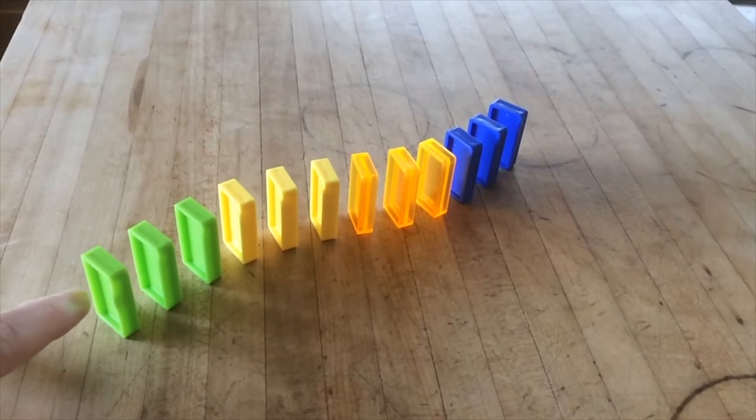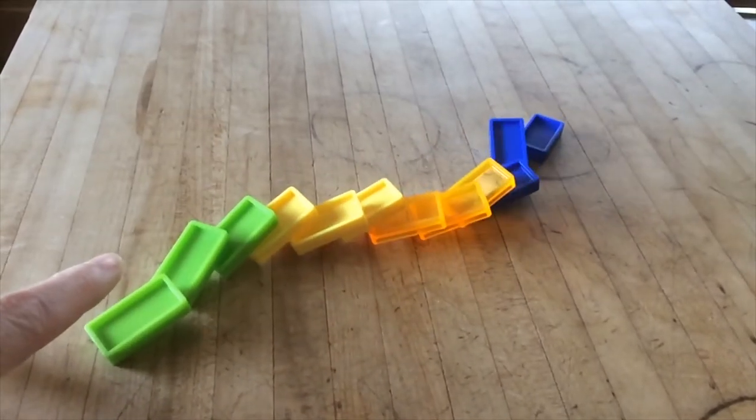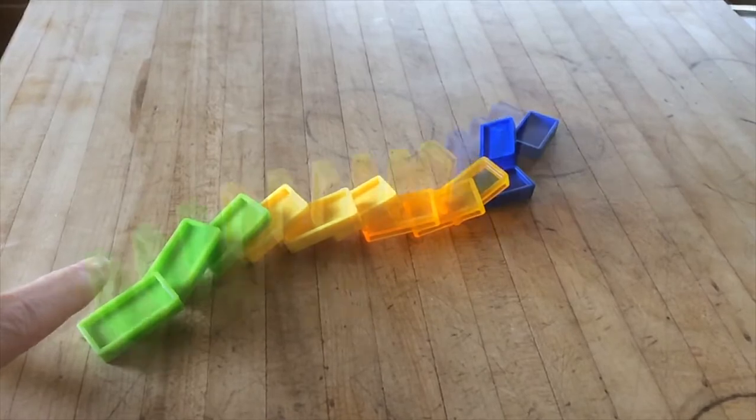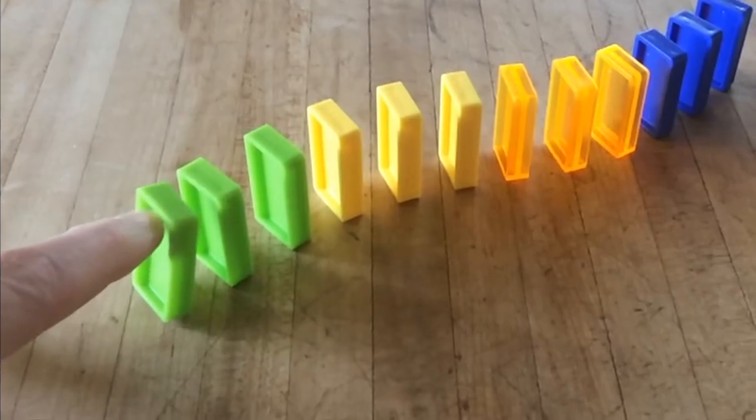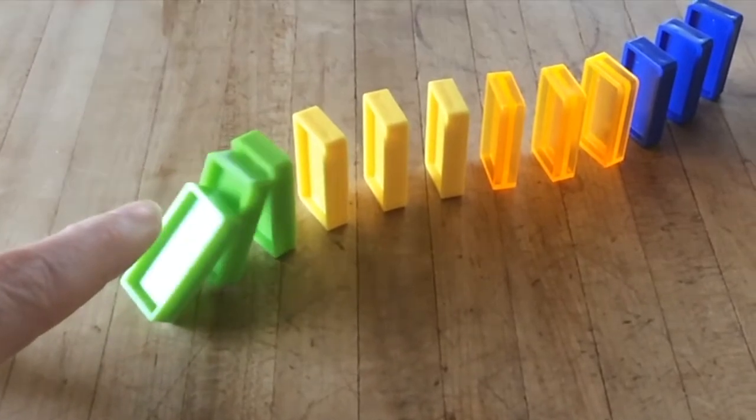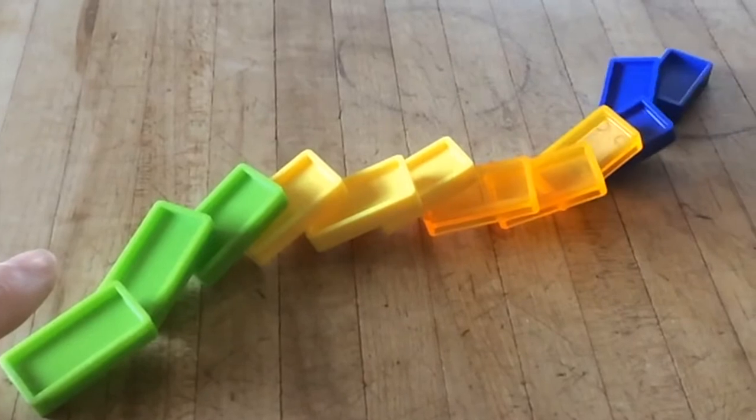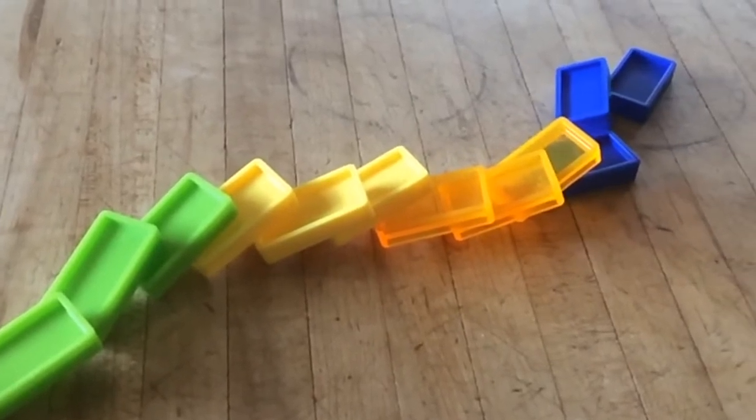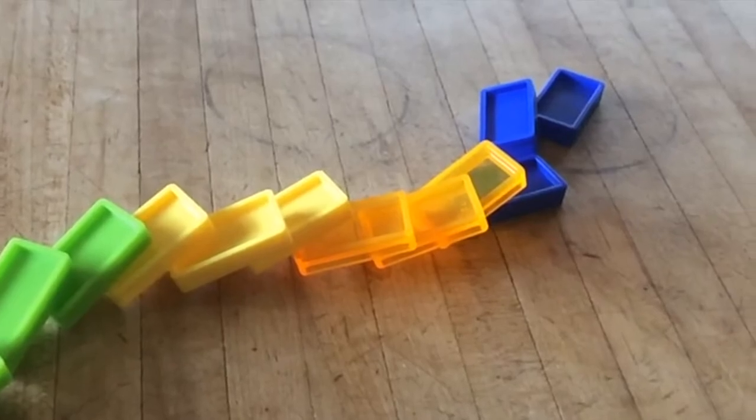Have you ever watched how dominoes can be set up in fun designs and then knocked over one domino at a time? It all starts with a simple tapping of the first domino in the chain. That initial burst of energy puts the entire chain reaction into motion. The first domino knocks over the second, and then the second falls over and knocks over the third, and so on until the very last domino in the chain falls over.